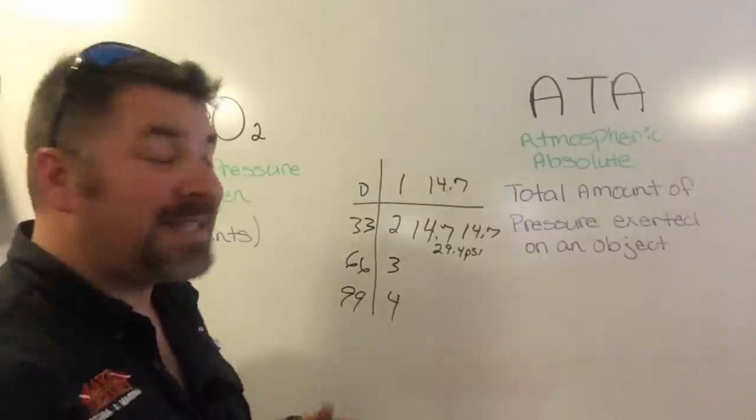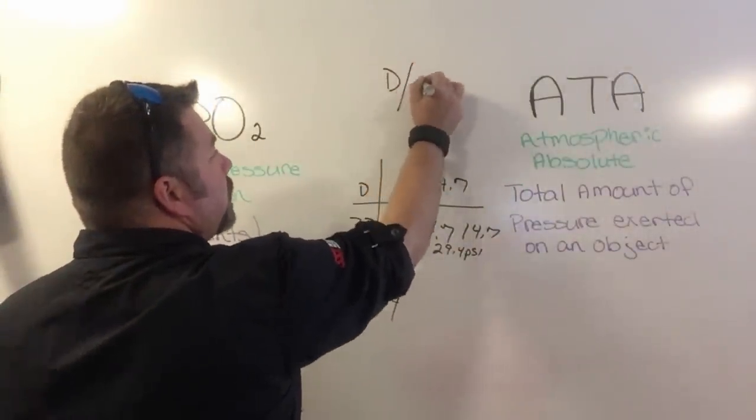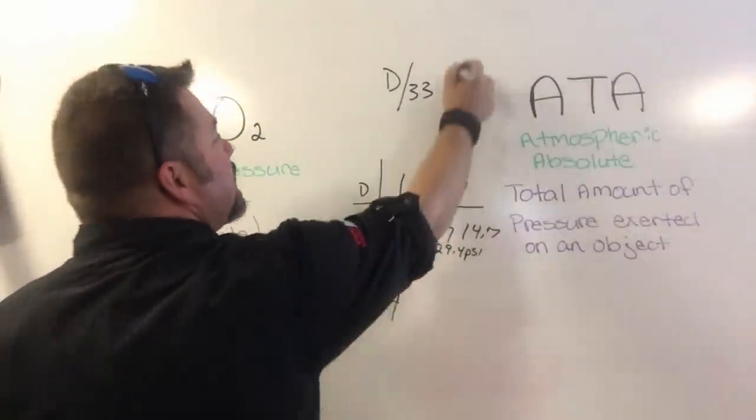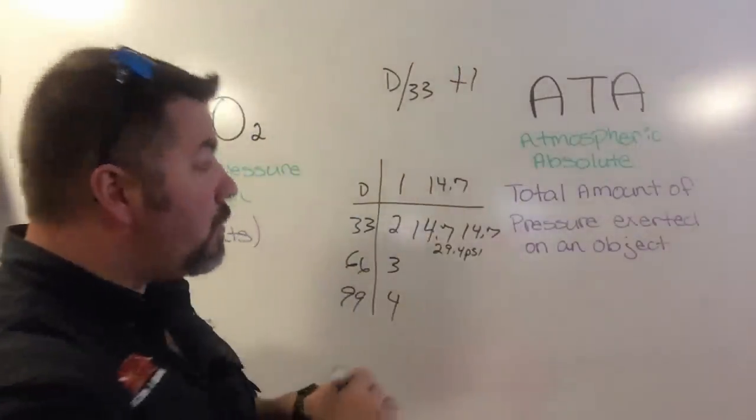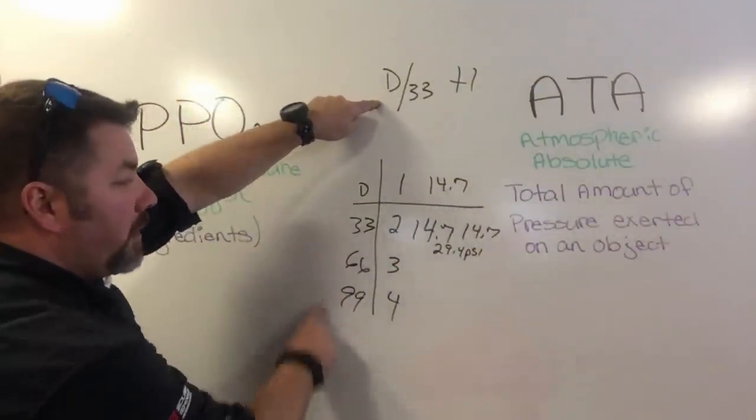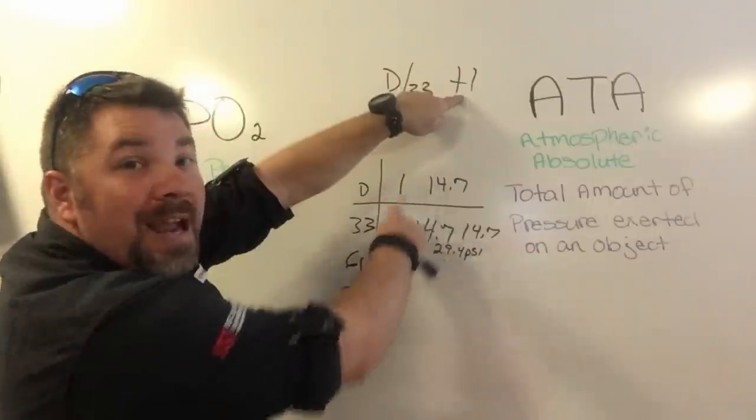To calculate the ATA, you simply take depth, divide it by 33, 34, or 10 depending on what increments you're using, and then add one to the total. That will give you the ATA.